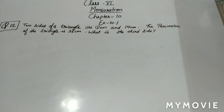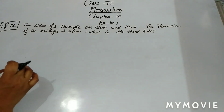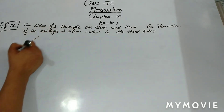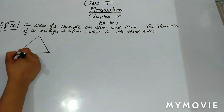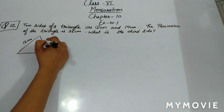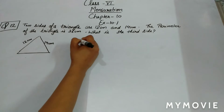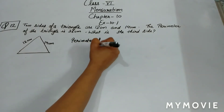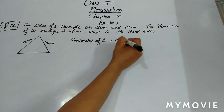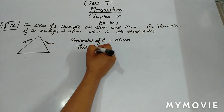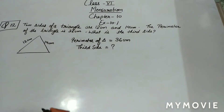Hello students, let us start with question number 12 of Exercise 10.1 of the Mensuration chapter. We have a triangle with two sides given: 12 centimeter and 14 centimeter. The perimeter of the triangle is also given, that is 36 centimeter. We need to find out the third side of this triangle.